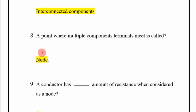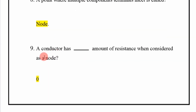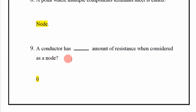A point where multiple component terminals meet is called a node. A conductor has zero amount of resistance when considered as a node.